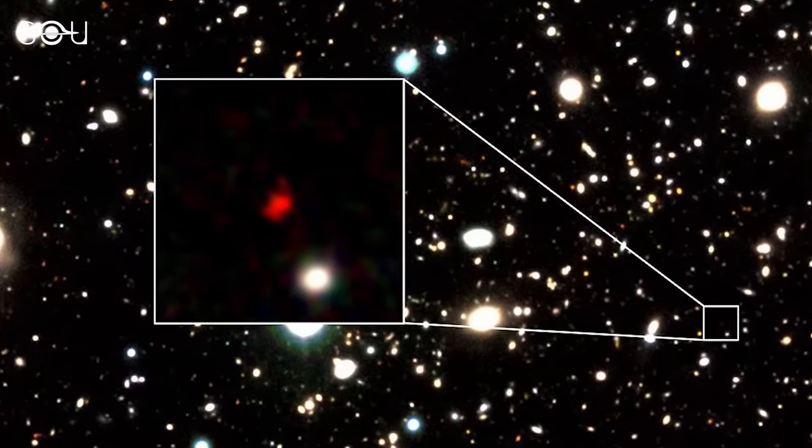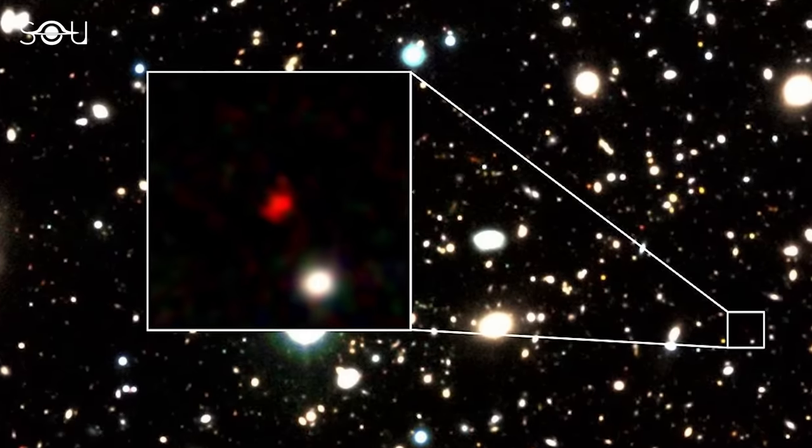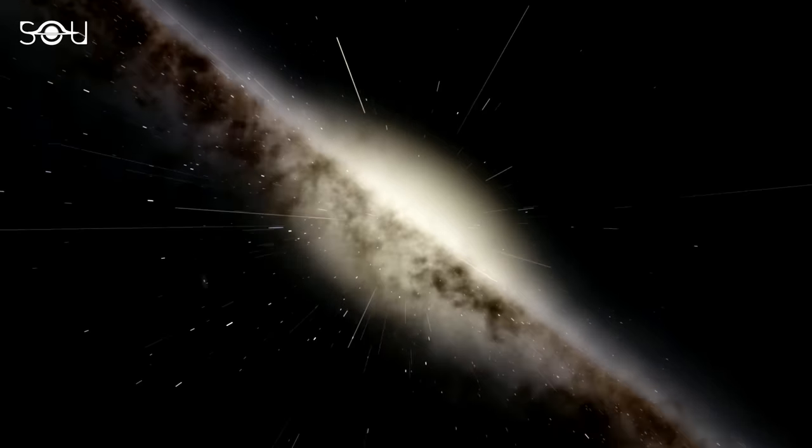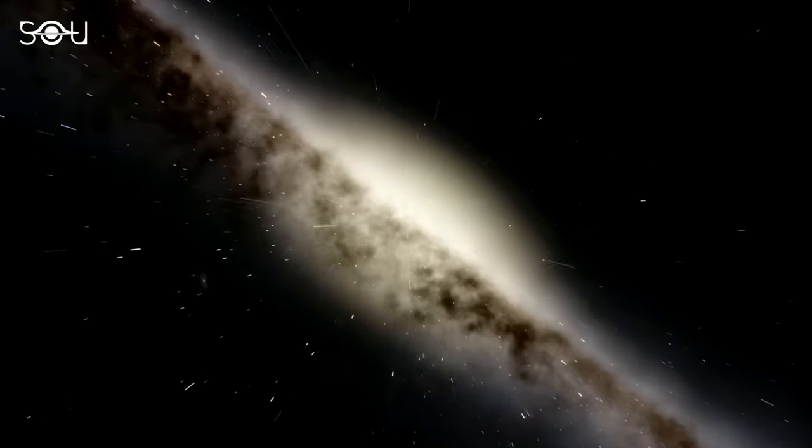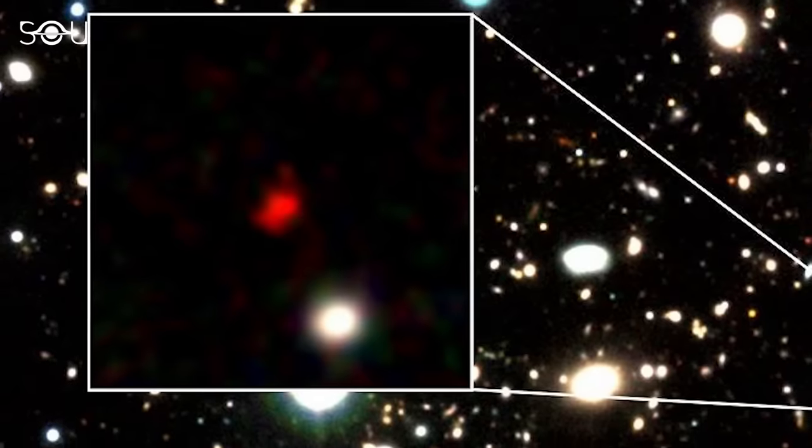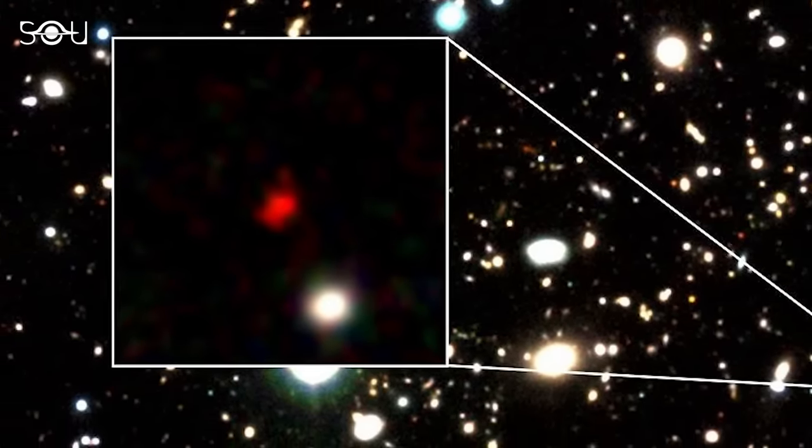The red object you're seeing in this image is the farthest galaxy found to date. It's so far away that even light had to travel 13.5 billion years to reach us. But what's so special about the nature of this distant galaxy?